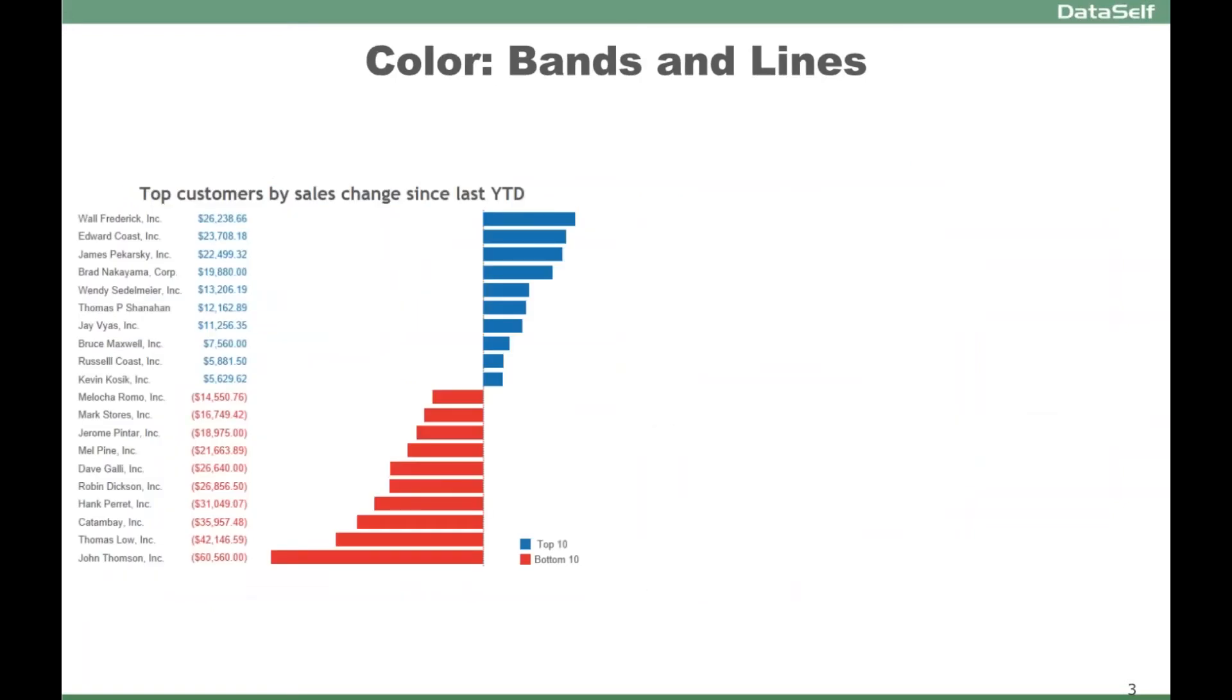This is another example from one of our clients where they took one of our out-of-the-box reports showing top customer by sales changes last year to date. They have the information on a grid and also on a chart. Initially very clean, very simple, not cluttered report, but it's a little tricky for people who like to see charts to relate the chart to the same customer.